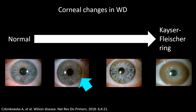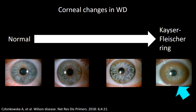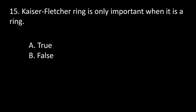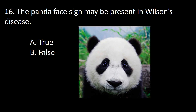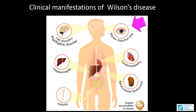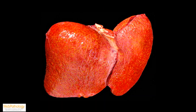So the answer is B. Next question: the panda face sign may be present in Wilson disease — A, true; B, false. Liver damage is prominent in some patients but hardly present in others; when present, the liver becomes large and cirrhotic due to accumulation of copper in the hepatocyte and subsequent cell death.